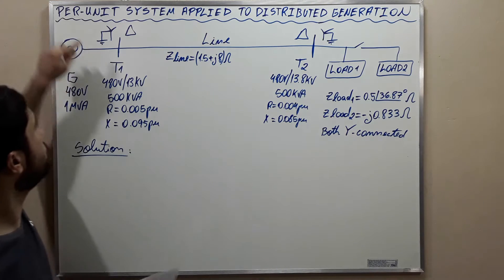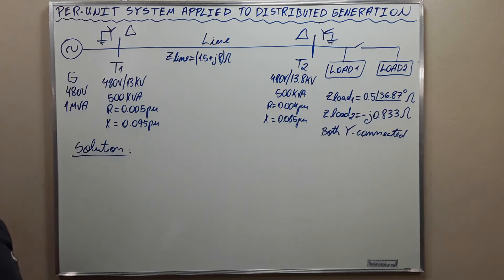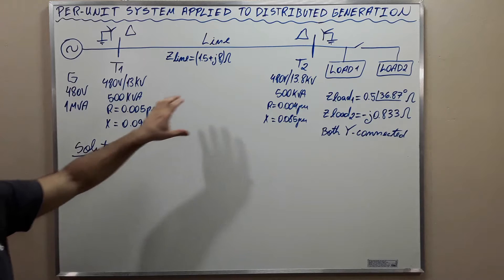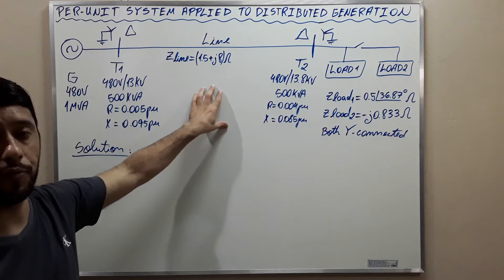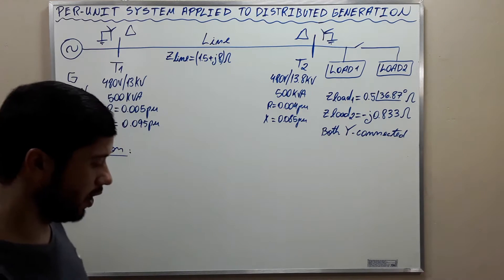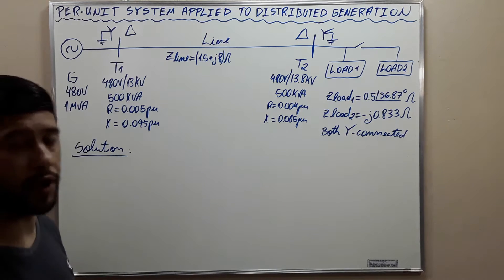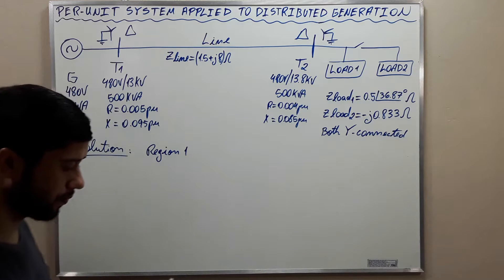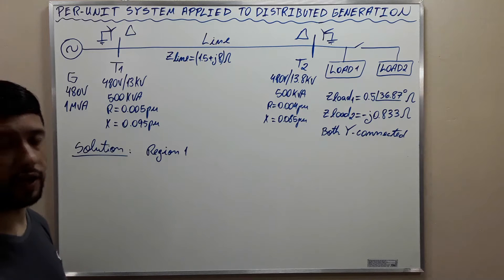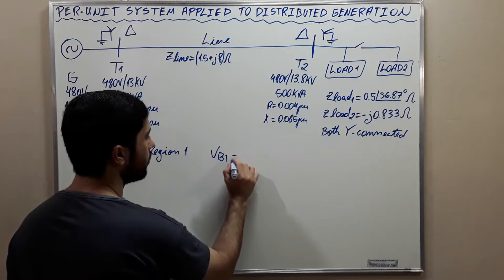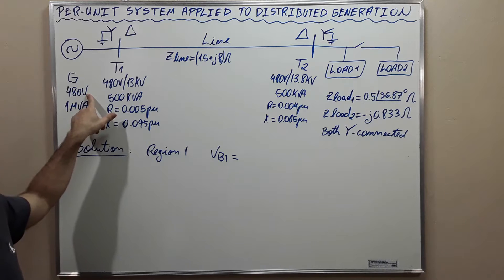We wish to use the per unit system, and whenever using the per unit system, we need to establish base values for region 1 — the region of the generator — for region 2 — the region of the distribution line — and for region 3, the region of the loads. First of all, region 1, the region of the generator.